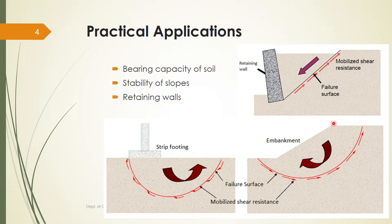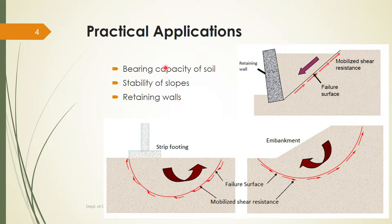The second application is the embankment. For embankments you have slopes, and for the stability of those slopes we need to know the shear strength of the soil. Here you can see a failure surface — slopes fail with the entire soil mass moving. For designing slopes we need to know the shear strength. The third application is footings: to find the bearing capacity of soil we need to know the shear strength. If shear stress developed exceeds shear strength, the soil will fail.